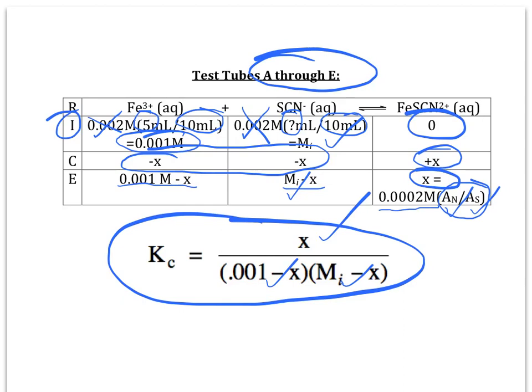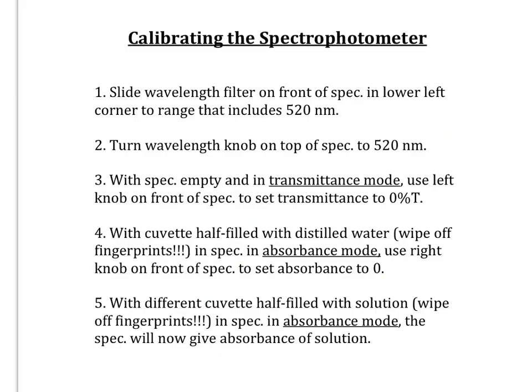Now, let's take just a few minutes to talk about the spectrophotometer to remind you of some key steps as you take spectrophotometer measurements. I know you're all experts from the Beer's Law Lab, but a little reminder can't hurt. Here's the list of things to keep in mind when you're calibrating the spectrophotometer. Remember, there's a wavelength filter on the front of the machine over on the left side. There's two ranges. You want the lower range that includes 520 nanometers. Slide it over so that the range includes 520 nanometers. Then go to the top of the machine and turn the wavelength knob until it reads 520 nanometers.